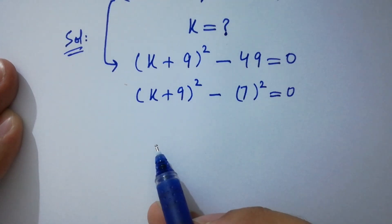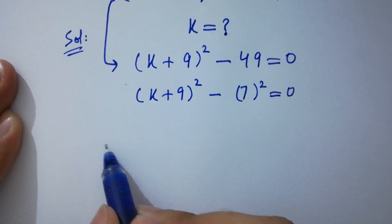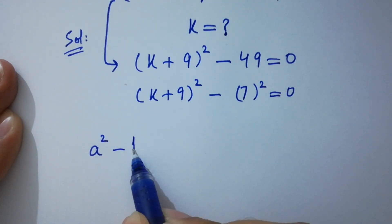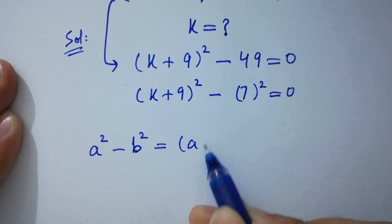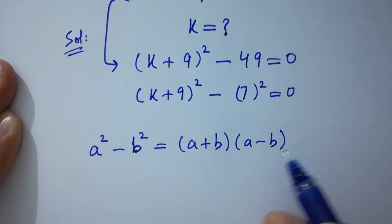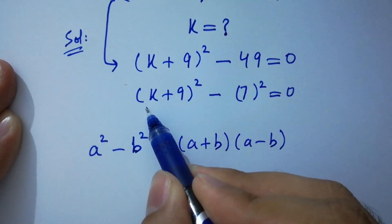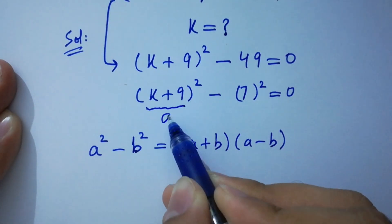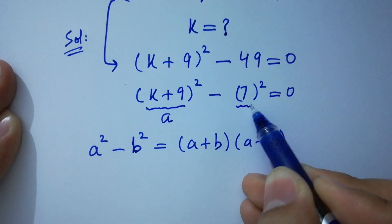By this, we know the formula of a² - b² which is equal to (a + b)(a - b). You can see k + 9 is a and 7 is b.